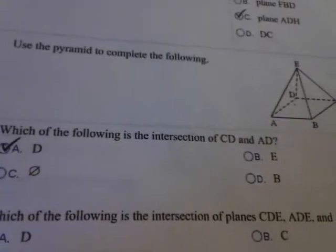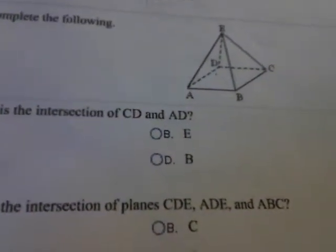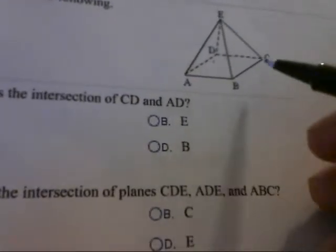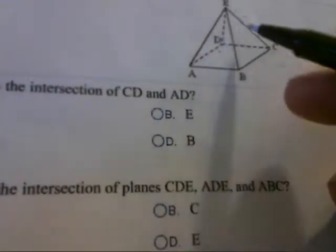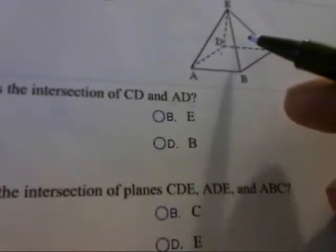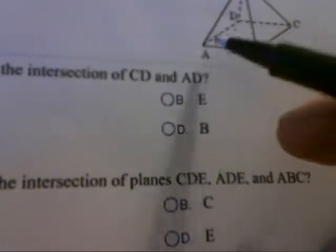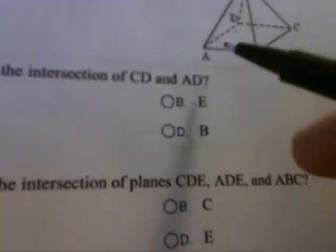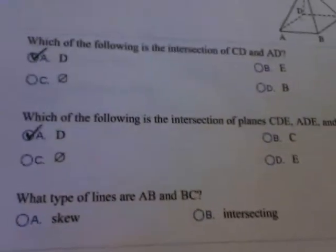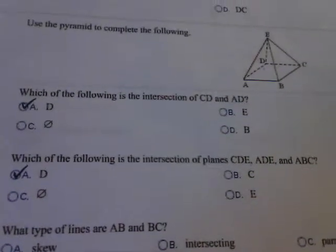The next question asks for the intersection of planes CDE, ADE, and ABC. CDE is the triangle behind the pyramid, ADE is the triangle on the left-hand side, and ABC is the plane at the bottom. Looking at the intersection of all three — CDE, ADE, and ABC — they all intersect at a common point, which is D. So point D is the intersection of planes CDE, ADE, and ABC.